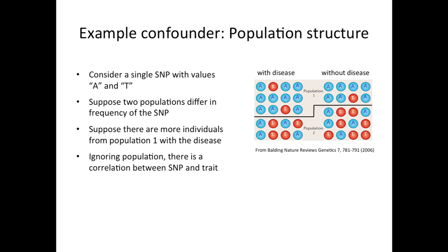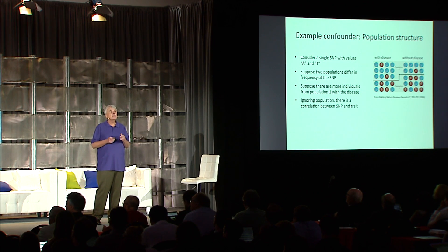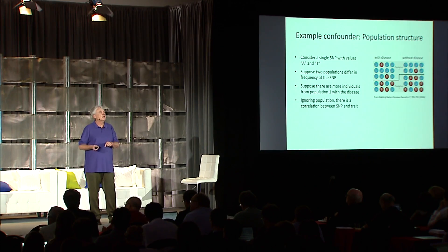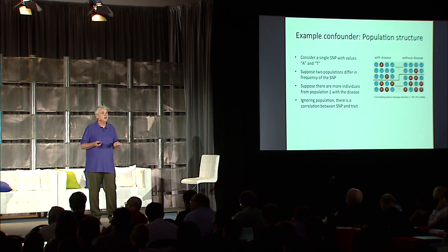Each circle here corresponds to an observation for a given individual. In this data, as you can see, there are two populations — maybe two different ethnicities. In population one you have more A's than T's, and in population two you have more T's than A's. The people with the disease come more from population one, and the people without the disease come more from population two. So you can see there's a correlation between the SNP and having the disease. But we don't care about these correlations — what we're looking for are causal correlations. This is just a spurious correlation due to the population structure. We call these false positives, type one error, and spurious associations. We want our algorithms to not find these.